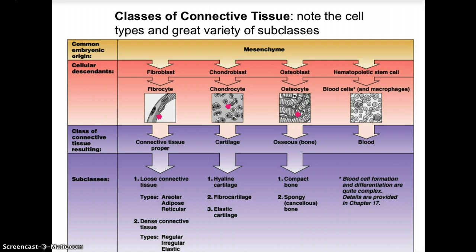Under connective tissue proper, we have loose connective tissue with types including areolar, adipose, and reticular. Dense connective tissue types include regular, irregular, and elastic. Under cartilage we have hyaline cartilage, fibrocartilage, and elastic cartilage. Under bone we have compact bone and spongy bone, also known as cancellous bone. Under blood we have blood cell formation and differentiation.